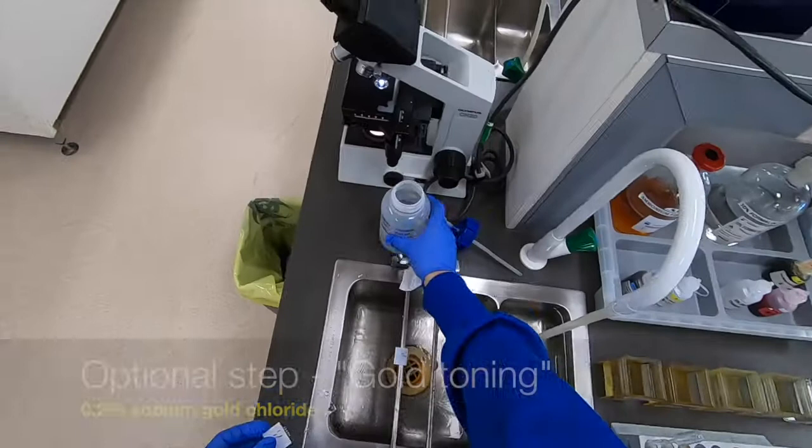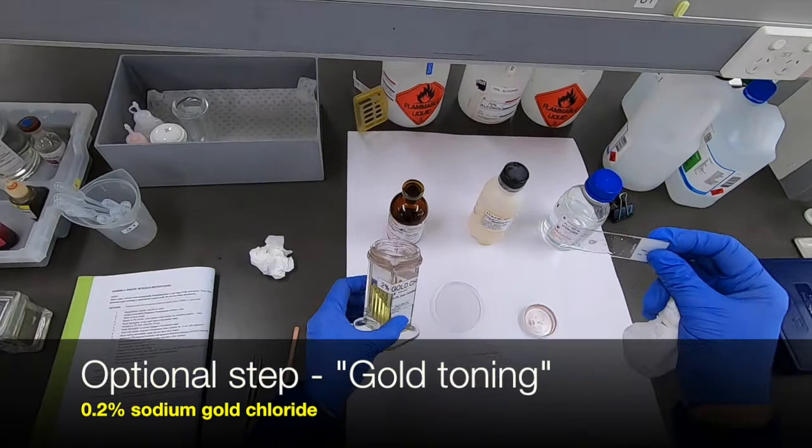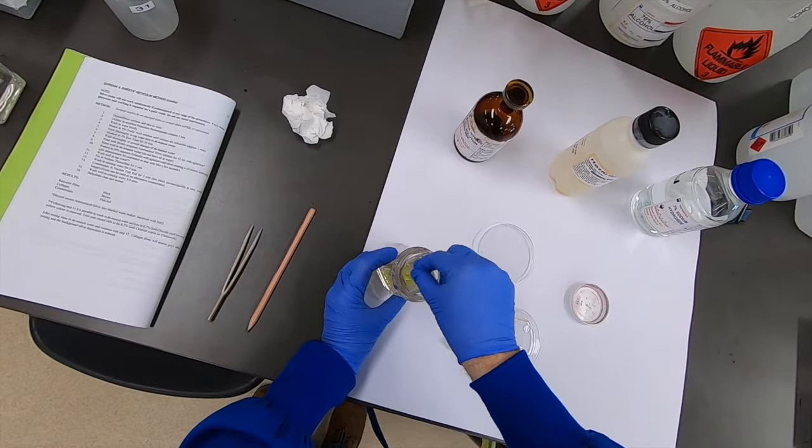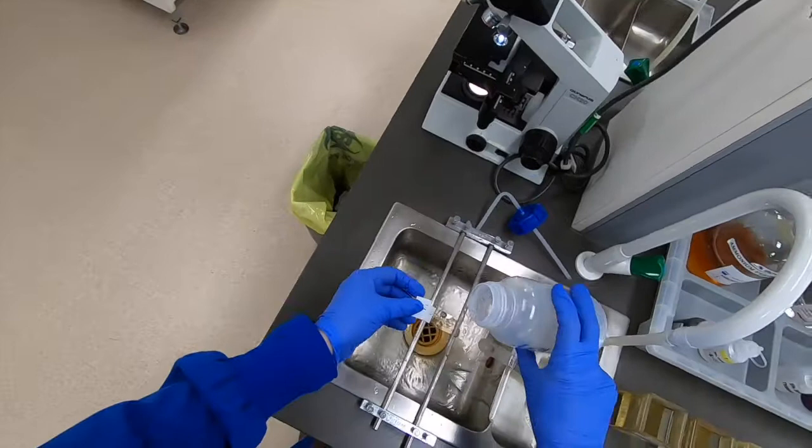And that is by using gold toning. Now the theory to gold toning is that you actually are replacing some of the fine silver precipitate with gold chloride. Now the gold will actually cause a slight purple hue to be formed in the tissue. So the theory is that that mixture of purple and brown to yellow will actually result in a more black color. So with the two metals being bound to the tissue, gold being purple, silver being brown to yellow, you get a mixture of those colors and the resulting outcome is this black to grey.